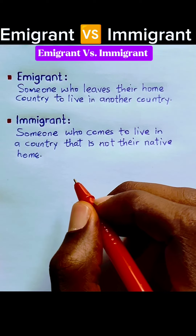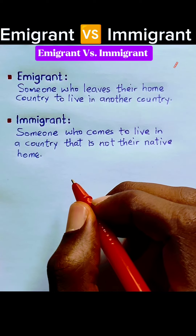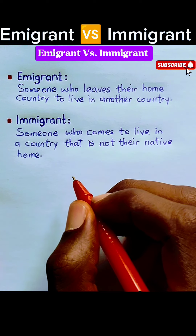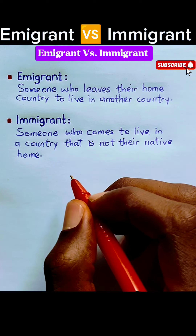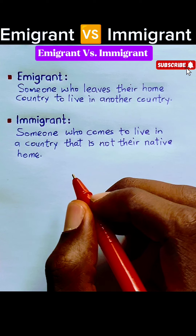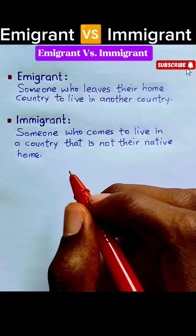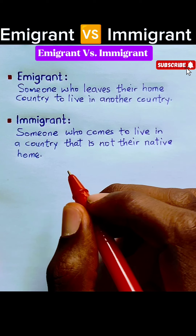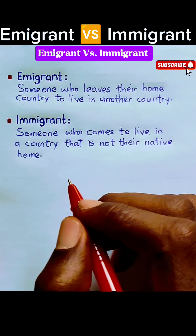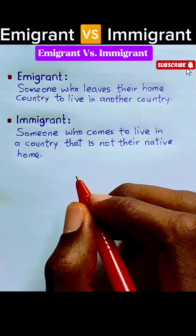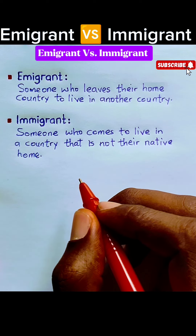Now, the difference between them lies in perspective. For instance, if you were a South African and you want to relocate to America, from the perspective of the South Africans around you, you are regarded as an emigrant because you are about to leave South Africa. But by the time you get to America, from the perspective of the Americans, you are regarded as an immigrant because you have just come into their country.